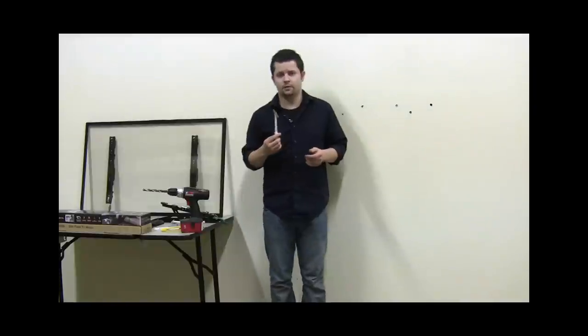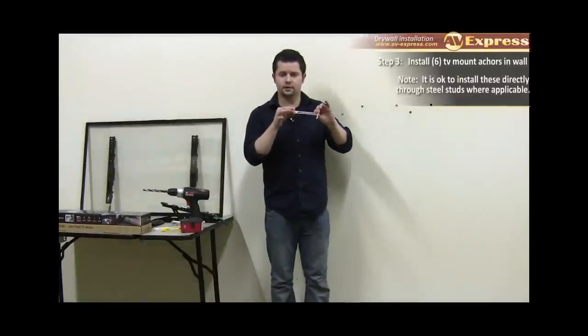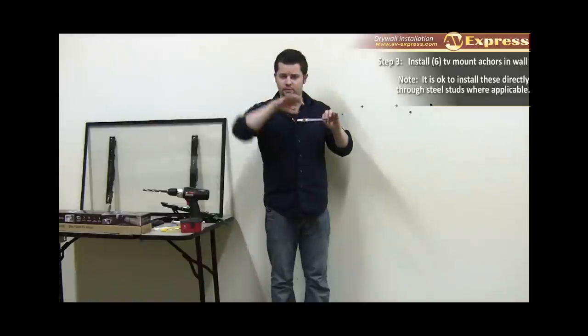Now that you've drilled your pilot holes, the next step in installing your TV mount grade drywall anchors is to insert them into the wall, tighten the plug down once the drywall anchor is secured, and then snap the ends off.